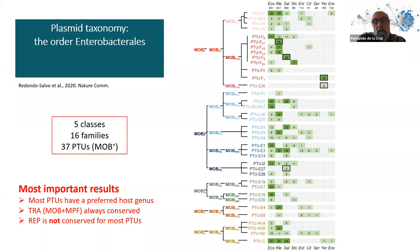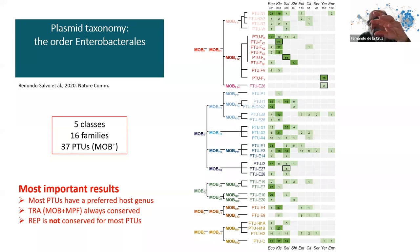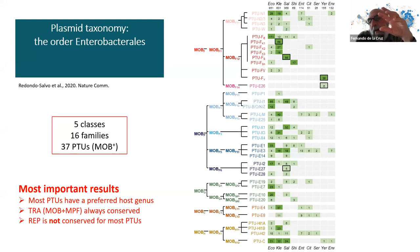These PTUs are grouped in five classes. The classes are defined by the relaxase genes, because this is like the slowest clock in a plasmid. There are five classes, and each class can be distributed into several families which share the whole transfer region. To define the taxonomy of a plasmid, we use the MOB type — the relaxase class — then the family, which defines the transfer system and everything connected to it, and the partition genes.